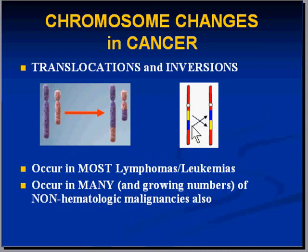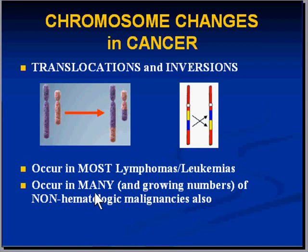The concept of an inversion is to take a segment of a chromosome — also usually on the longer Q segment — and just switch it around. So in almost all leukemias and lymphomas, there are some types of translocation, much more likely than an inversion, but also in a growing number of non-hematologic cancers as well as sarcomas.